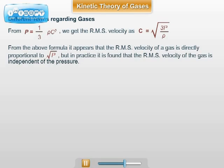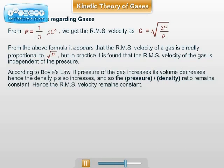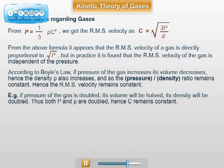But it can be seen that as pressure of the gas increases, according to Boyle's law, its volume decreases. Thus, the ratio P upon ρ remains constant. For example, if pressure of the gas is doubled, its volume becomes one half and the density becomes double. Hence, both pressure and density become double and the RMS velocity remains constant. Hence, another formula for RMS velocity is used.